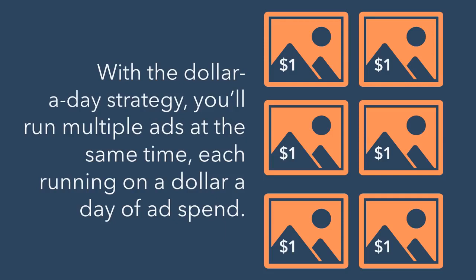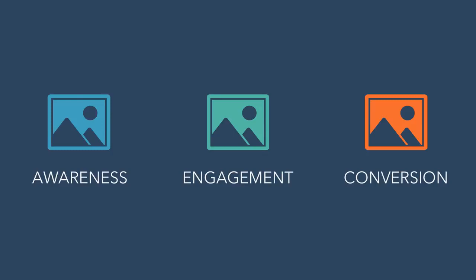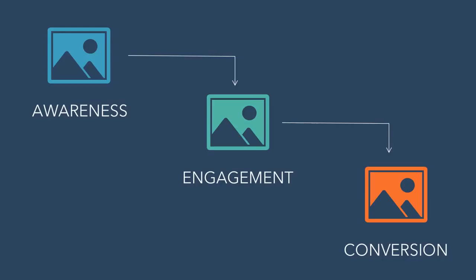With the dollar-a-day strategy, you'll run multiple ads at the same time, each running on a dollar-a-day of ad spend. Each of these ads will cater to one of three marketing objectives: awareness, engagement, and conversion. So you'll have a few ads running that are awareness ads, a few engagement ads, and a few conversion ads to make sure you're reaching potential buyers who are in different stages of the buyer's journey.